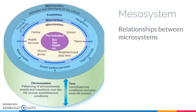From there we go to your mesosystem, which isn't really clearly defined in this graphic. But the mesosystem is just the relationship between your microsystems. So for a child, for example, it might be the relationship between family and school — do the parents get along with the teacher, do they trust the teacher, do they feel comfortable going to the teacher if there is a problem? Or it might be the relationship between where the kid lives and their family — if they live in an unsafe area, how does this maybe affect the rules that their parents are setting for them? So that's the mesosystem.